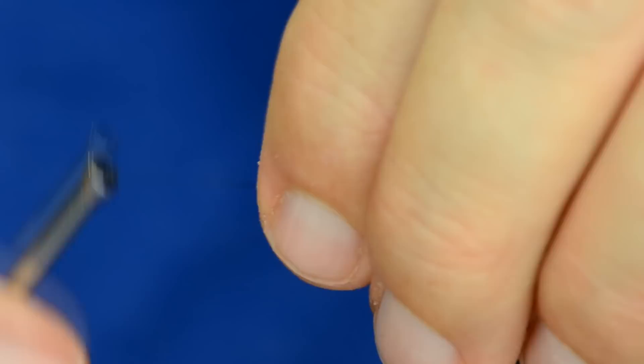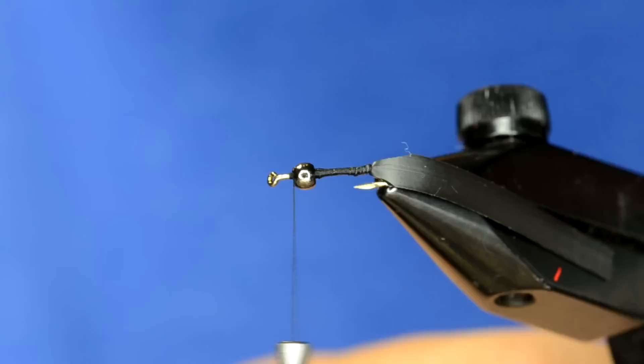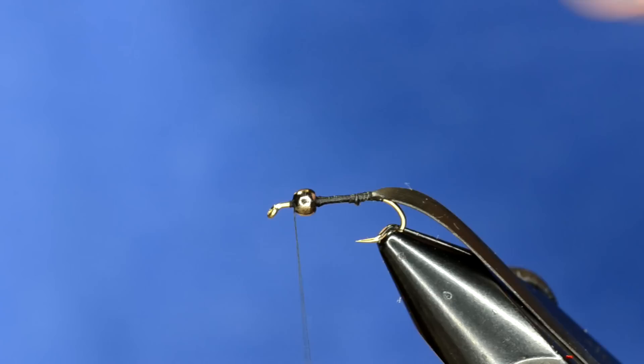And then what I'll do is I'm going to pass my thread in front of the bead and just tie that off right where I want, right there. And so you want about an eye width behind the eye of the hook between the bead.